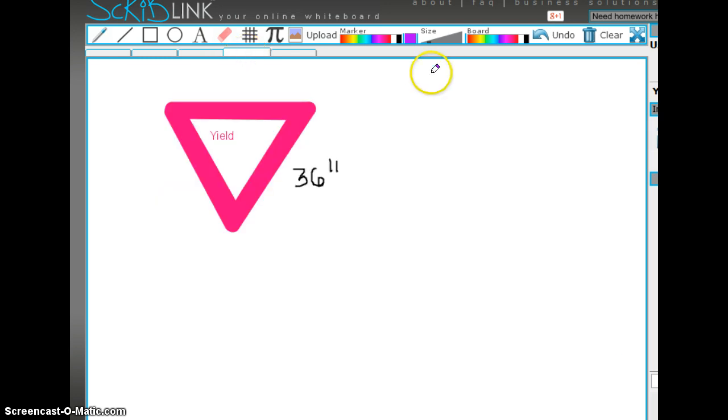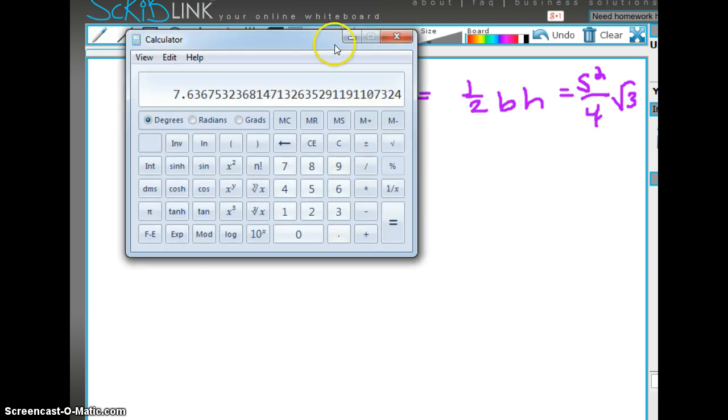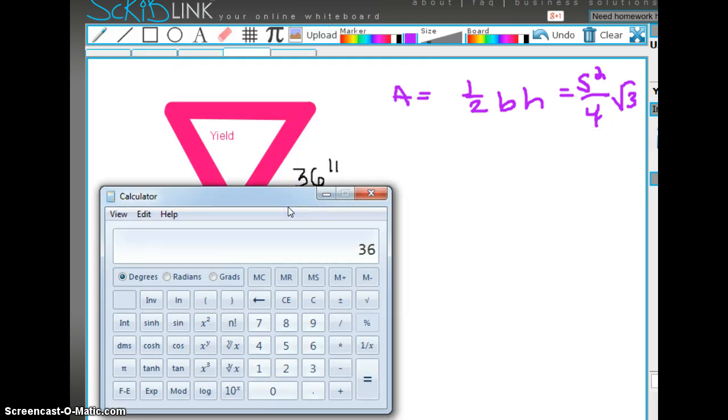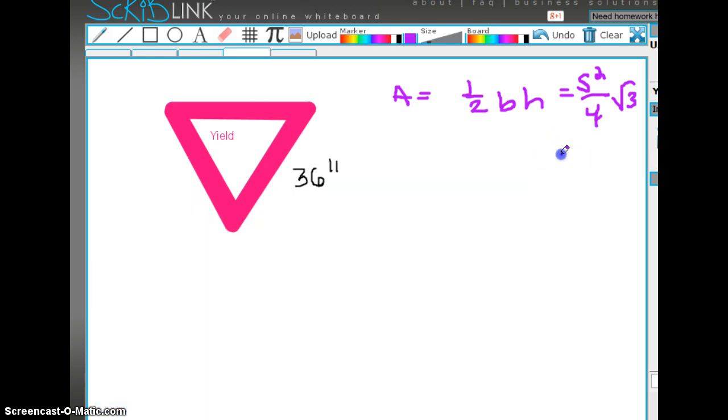The yield sign. Suppose someone was asking you to find the area of this. Well, the area is one half base times height and for an equilateral triangle it's also equal to S squared divided by 4 square root of 3. The side is 36. 36 times 36 divided by 4 times 3 square root is equal to about 561 square inches.